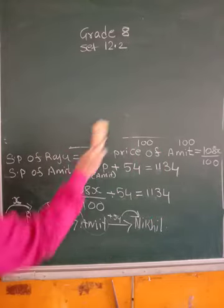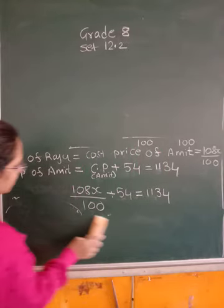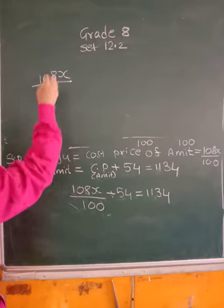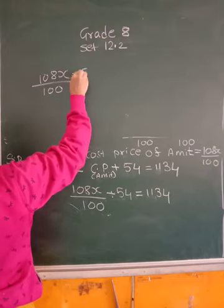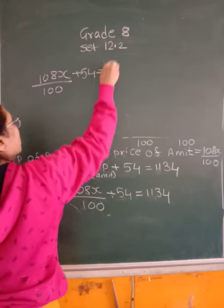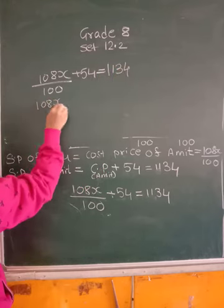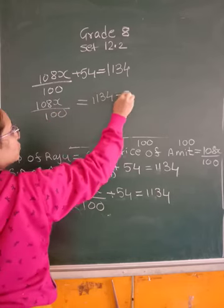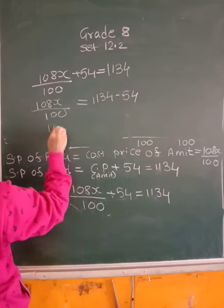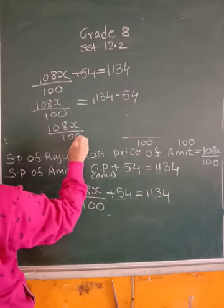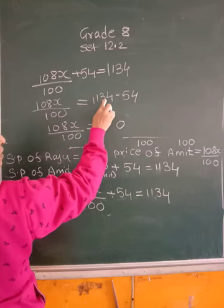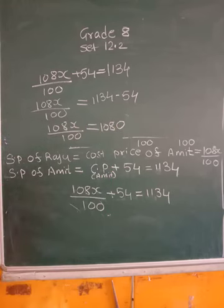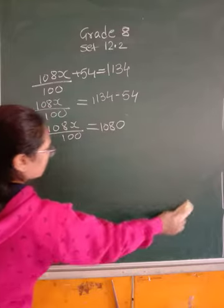Now we can solve this. Let me write this again. So we have 108X upon 100 plus 54 is equal to 1134. So I have 108X upon 100 is equal to, transfer here, it will be minus 54. So I have 108X upon 100 will be equal to, if you subtract this, it will be 1080. You do the subtraction and see.